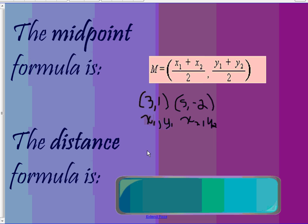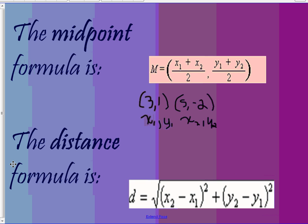The distance formula is: d (distance) equals the square root of the quantity (x2 − x1) squared plus the quantity (y2 − y1) squared. Order of operations is very important here — you subtract first, then square both results, then add them together, and finally find the square root.